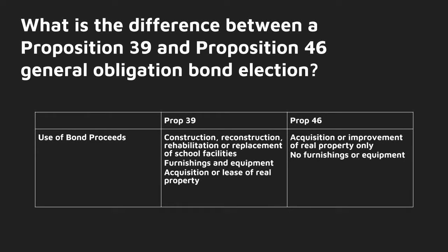Prop 39 has more flexible use of bond proceeds in that the proceeds can be utilized for brick-and-mortar projects in addition to furnishings and equipment, whereas Prop 46 can only be used for brick-and-mortar projects, which does not include furnishings or equipment.